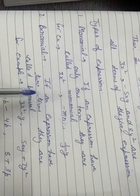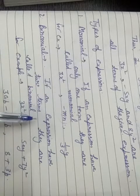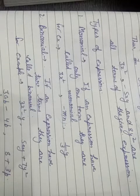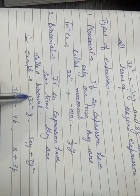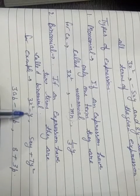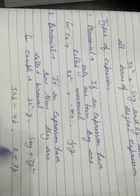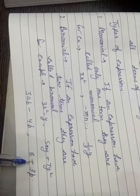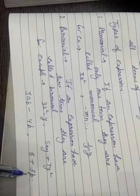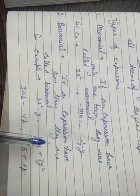Next: binomial. If an expression has two terms, it is called a binomial. For example, 3X² - Y has two terms: first term is 3X², second term is -Y, so it is called a binomial. 5XY + 7Y² has two terms: 5XY and 7Y², so it is a binomial. 3AB - 4B has two terms: 3AB and -4B, so it is a binomial. 8 + 3B has two terms: first term is 8, second is 3B, so it is a binomial.